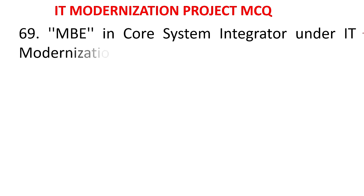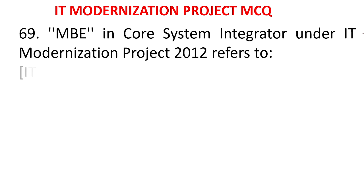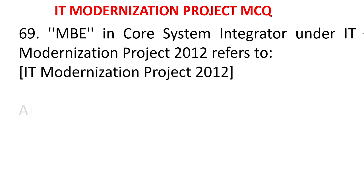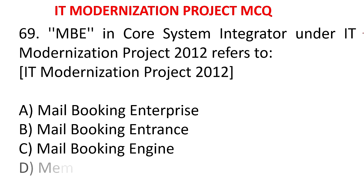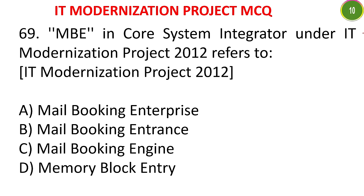MCQ 66: MBE in core system integrator under IT modernization project 2012 refers to - A) Mail Booking Enterprise, B) Mail Booking Entrance, C) Mail Booking Engine, D) Memory Block Entry. The answer is Mail Booking Engine.